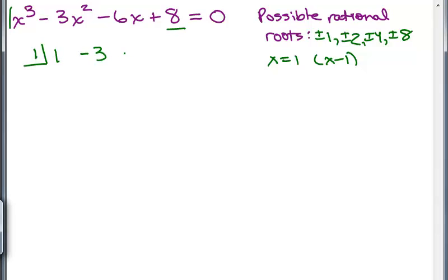So we also need to know synthetic division to do this method. Let's see, that's one and one times one goes up here as one. Add, that's negative two. One times negative two is negative two. Negative six plus negative two is negative eight. One times negative eight is negative eight. Add, you get zero. So you know what? One was one of the roots. So this tells us X minus one was one of the factors because we have a remainder of zero.